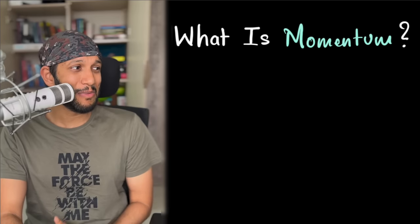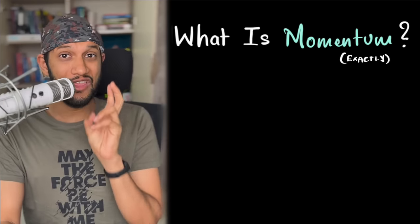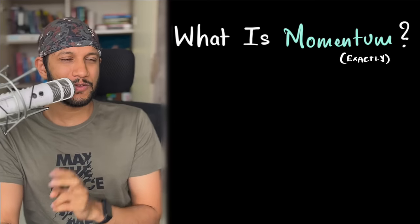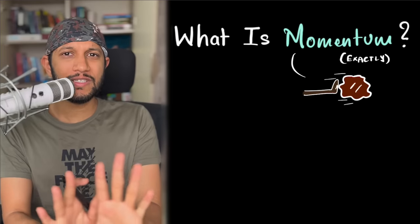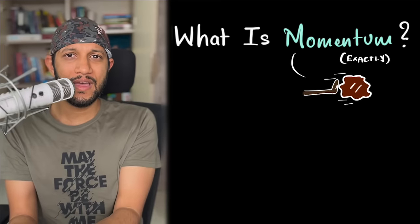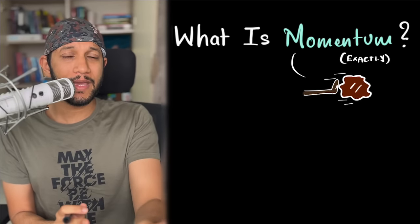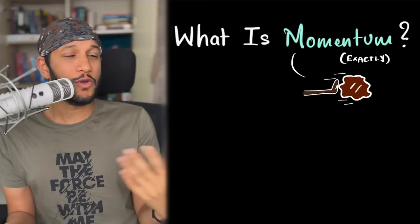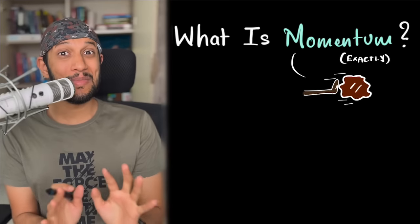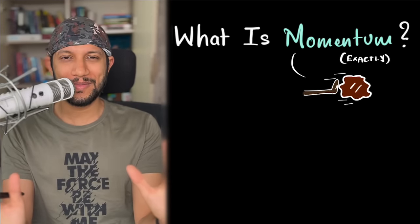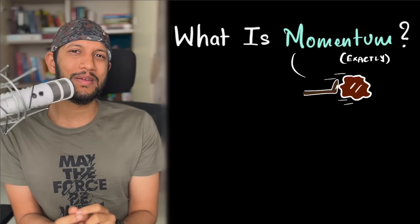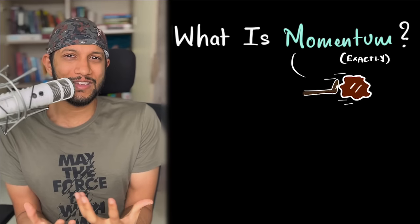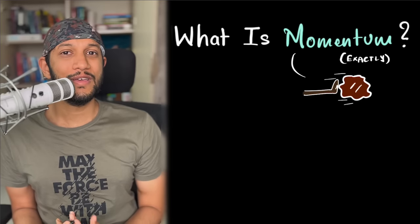So Feynman says: momentum is the ability to push something and make it move. Anything that can push something and make it move has momentum. If something can push a lot and make it move a lot, it has a lot of momentum. If something can push a little and make it move a little, it has a little bit of momentum. Let's use this as our definition and see if light has momentum.